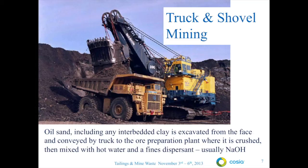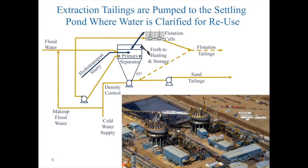Here it is crushed, then mixed with hot water and a fines dispersant, which is usually sodium hydroxide. A slurry pipeline provides ore conditioning as well as transport to the extraction separation system. Here the bitumen is recovered through flotation, and the tailings are pumped as a slurry to the tailings disposal area. Here's a picture of two extraction processing trains that handle a total of about 10 tons per second of oil sand slurry.